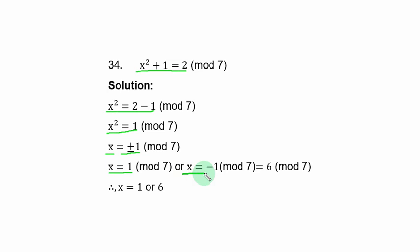If you look at the first result, 1 is an element in modulo 7. But minus 1 is not an element. And in the lesson under addition and subtraction, we said that if you have negative remainder, what you do is to add it to the modulo you are working with. So if you add minus 1 to 7, you have 6.